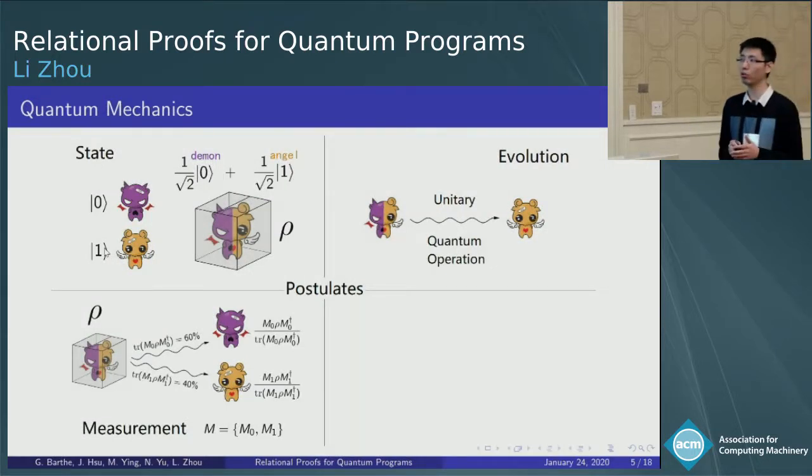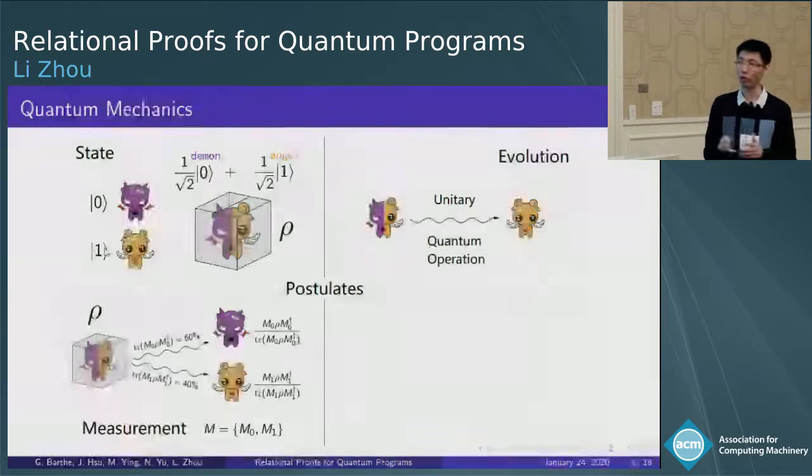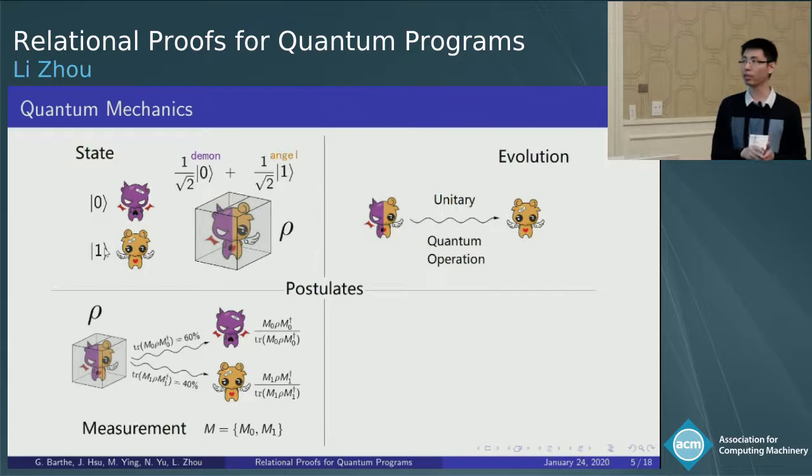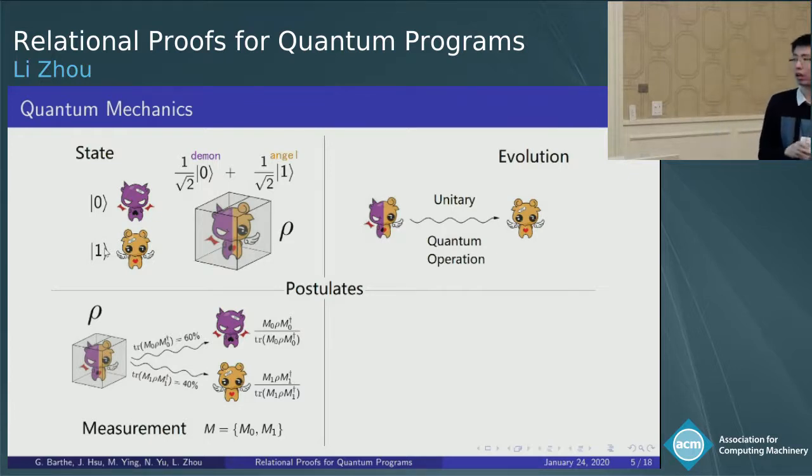The third one is about quantum measurement, which is essentially different from the classical measurement, because it will change the state. For example, if we open the box here, and we get the classical information, we know it's a daemon or an angel with a certain probability, but at the same time, the quantum state collapses to the daemon or angel. Generally, quantum measurements are used to extract classical information from a quantum state.